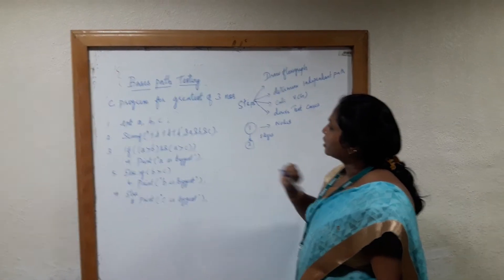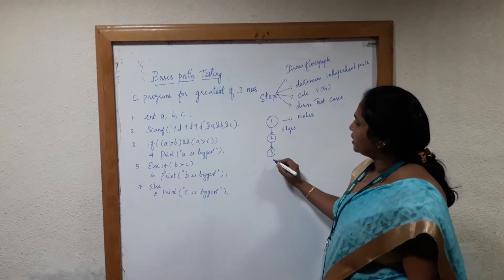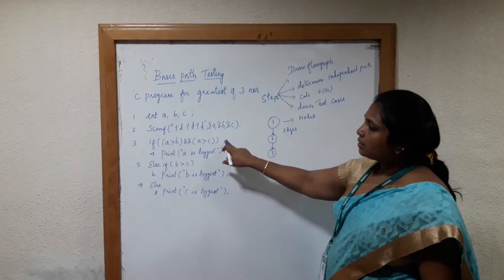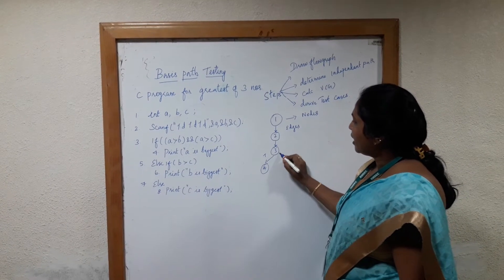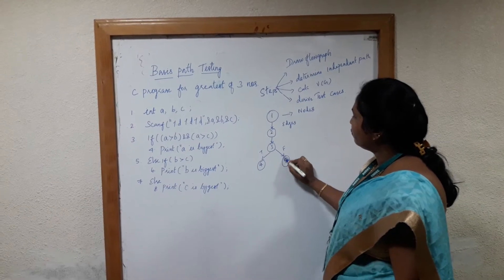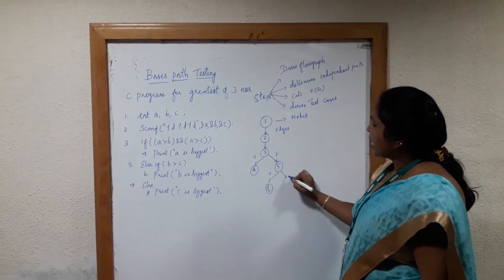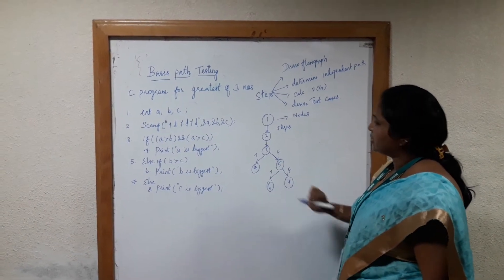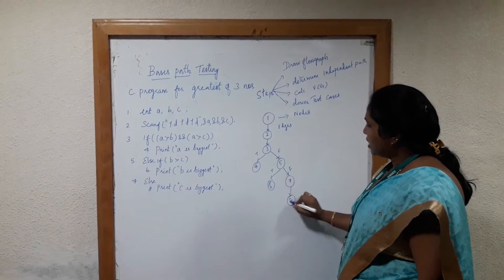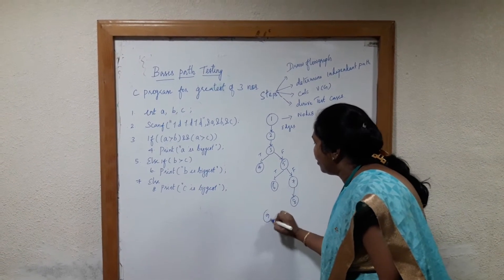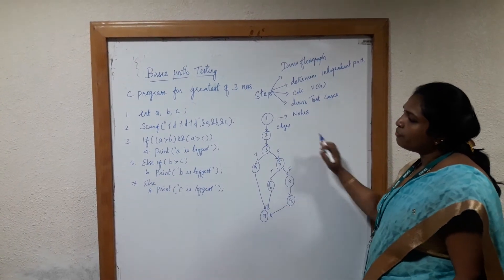From the first node, the compiler executes the second line followed by the third line — this is sequential data flow. The third line is a condition statement: if true it goes to the fourth line, if false it moves to the fifth line. The fifth line is also a conditional statement: if true it moves to the sixth node, if false it moves to the seventh line. The else part executes line number 8. You draw an end node called 9 to close the control. This is how you draw a flow graph.